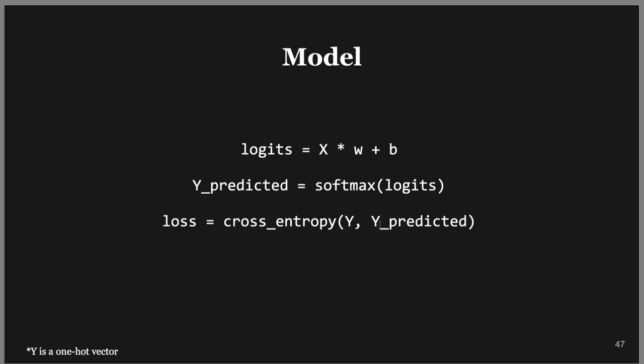Y is going to be one-hot encoded — a vector of 10 where one position is 1 based on the class and everything else is 0. Since the summation over all classes trivially turns out to be 1, it can be treated as a probability distribution, which is why we can use y within the cross-entropy function.